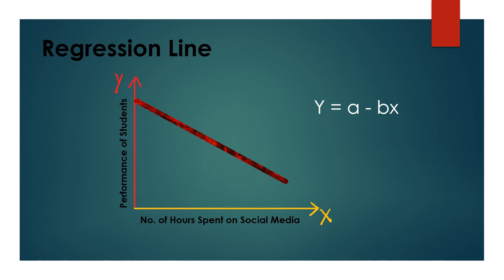In contrast, if on the x-axis there are number of hours spent on social media and performance of students is on the y-axis: if hours spent on social media increases, performance decreases, and if hours on social media decreases, performance increases. So these two variables bear a negative relation, and the regression line points in the downward direction. Again, a is the y-intercept, but b is the slope, and since the slope points downward, there is a negative sign — y equals a minus bx in this case.